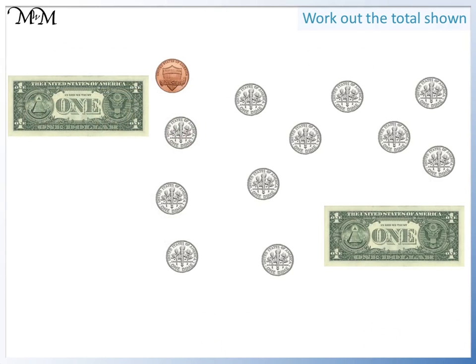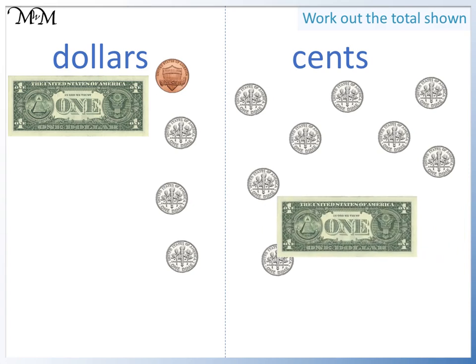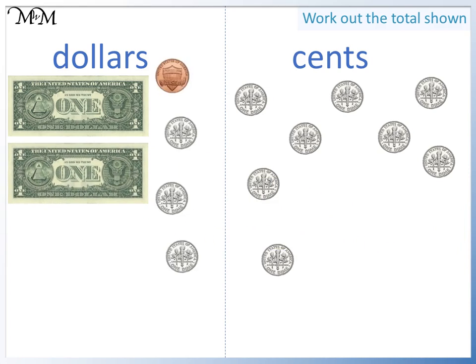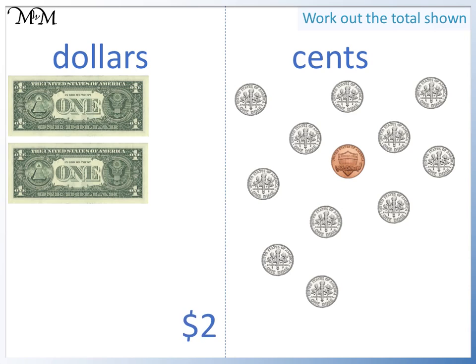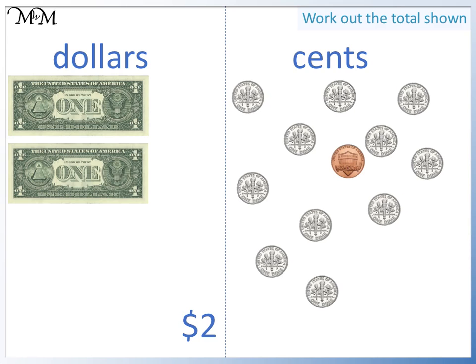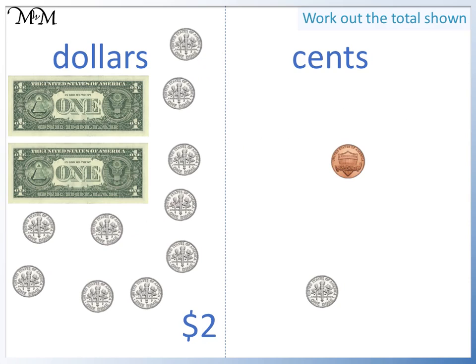Here's another example. Again, we'll separate the dollars and cents. Looking at the dollars, we have two. Looking at the cents, we can count the dimes to see if we have enough to make another dollar. Since one dime is worth ten cents, we need ten of them to make a hundred cents. We have ten dimes, so we can move these across to make another dollar. We now have three dollars.